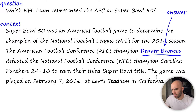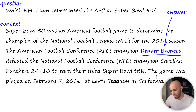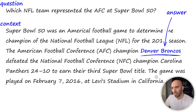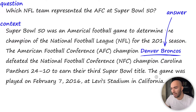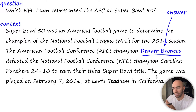The data we're going to be using is worth mentioning so you understand what we're actually putting into the models. We're using the SQuAD dataset, which is probably the most popular dataset for fine-tuning question answering models, at least for extractive QA models. It consists of three different components: a question, a context, and an answer. The question is just a question; the context is a longer piece of text which usually contains an answer; and the answer is a more specific chunk of text. For example, the answer to the question shown here would be 'the Denver Broncos'.